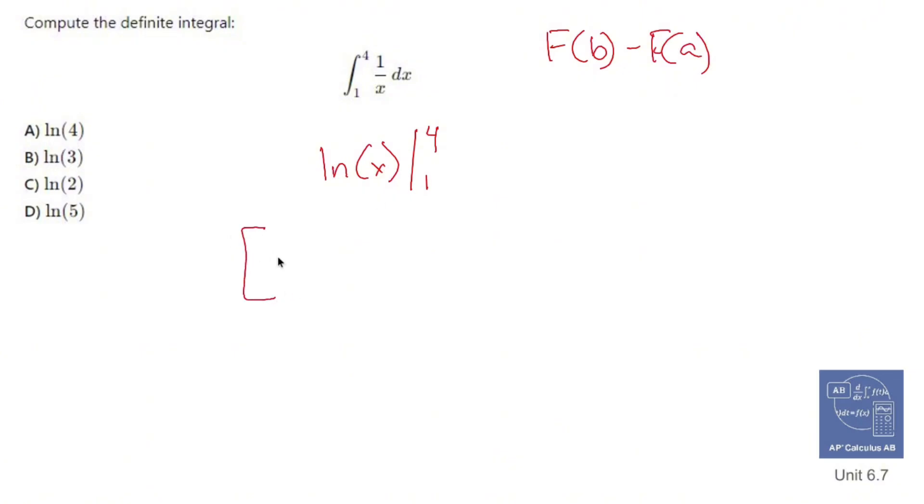So what I'm going to do is I'm going to write this out and plug in 4. So the ln of 4 minus the ln of 1.